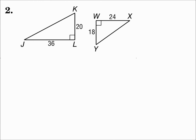Number two. Each triangle has two side lengths given and the angle between them, so we're going to see if side-angle-side works. We know that the angles are congruent. Now check the sides: the longer side on the left is 36, which matches the longer side on the right, which is 24. And the smaller sides are 20 and 18. Let's see if those side lengths are proportional.